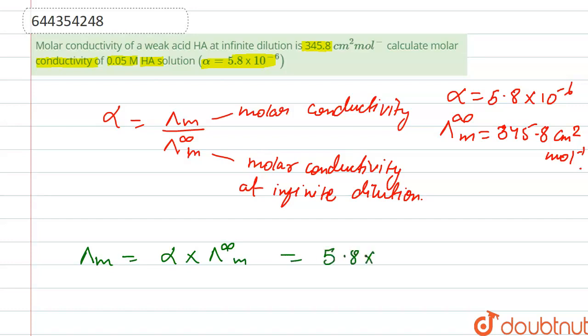So it is 5.8 × 10⁻⁶ × 345.8, which is equal to 2.00564 × 10⁻³ cm square per mole.